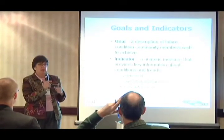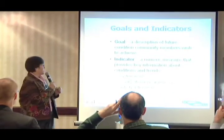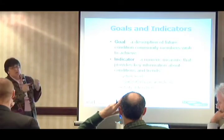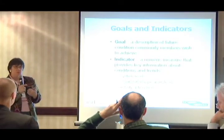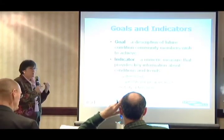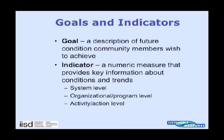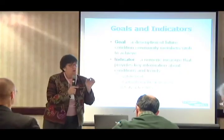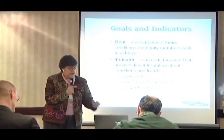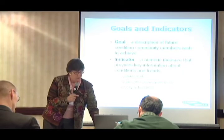You can't just ask what's the right indicator unless you know what goal it is you're measuring progress towards. The goal is the description of the future, and the indicator is a numeric measure. It could be at a system level — what's the big picture of where we're going — it could be at an organizational level, what are we doing about that big picture, or at an action level. It's important to think about when you develop an indicator which of those levels you're measuring.